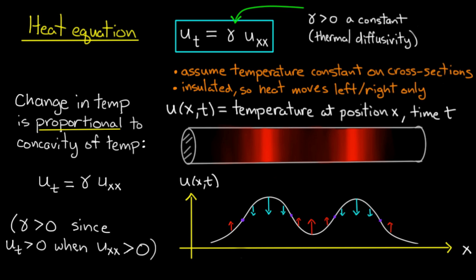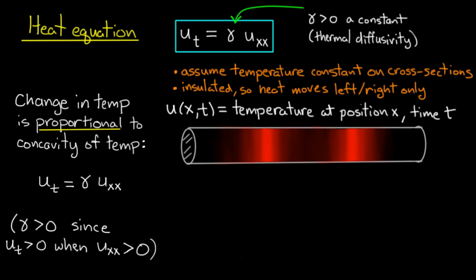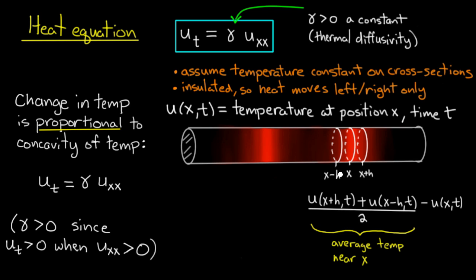Just because I like to look at things in as many ways as possible, let's take away this temperature profile picture and think about this another way. Consider a point x in the rod, a little slice and some nearby slices. You'd expect the temperature at this slice would be going up if the average temperature near x was bigger than the temperature at x, and you'd expect it to go down if the average temperature near x is smaller. That's represented by this quantity here. The average temperature near x is u plus u divided by 2. If the average temperature near x is larger, this quantity is positive. If it's smaller, this quantity is negative. So temperature at x goes up or down according to the sign of this quantity.